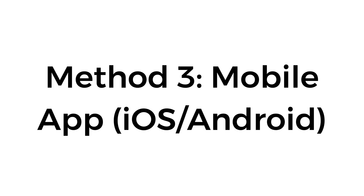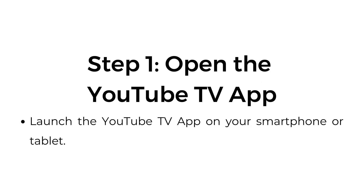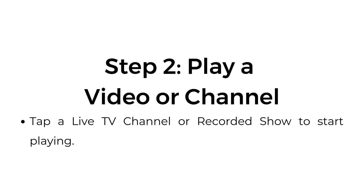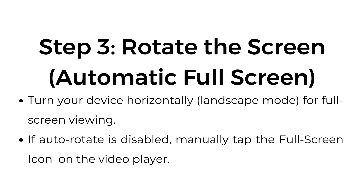Method number three: mobile app — iOS, Android. Step number one, open the YouTube TV app. Launch the YouTube TV app on your smartphone or tablet. Step number two, play a video or channel. Tap a live TV channel or recorded show to start playing.